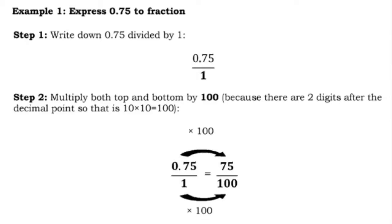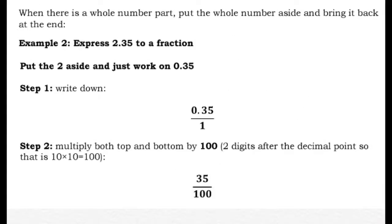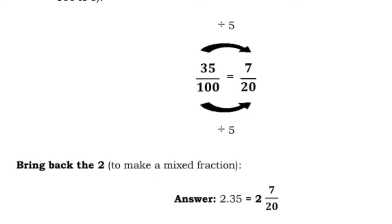Example 1: express 0.75 as a fraction. Write 0.75 over 1. Since there are 2 decimal places, multiply both by 100, giving 75 over 100. Simplifying — both are divisible by 25 — gives 3/4. Example 2: express 2.35 as a fraction. Set the 2 aside and work on 0.35. Since there are 2 decimal places, we get 35 over 100. Dividing both by 5 gives 7 over 20, so 2.35 equals 2 and 7/20.